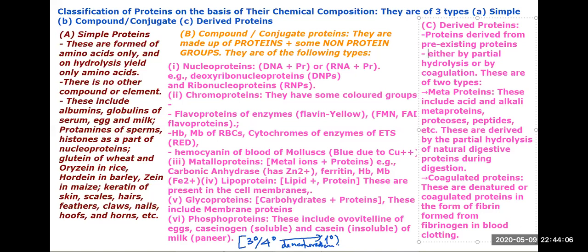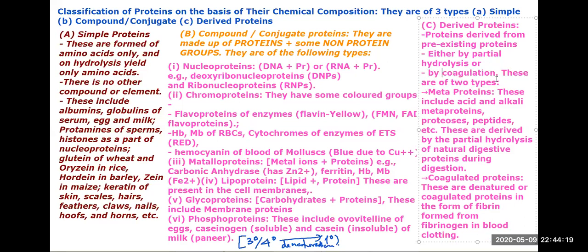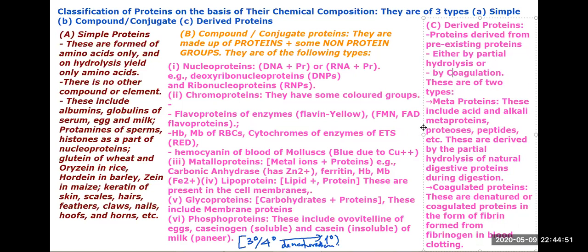Derived proteins are formed either by hydrolysis or by coagulation. For example, fibrinogen is a functional protein present in blood, but when you cut your finger and blood clots, fibrinogen converts to fibrin.